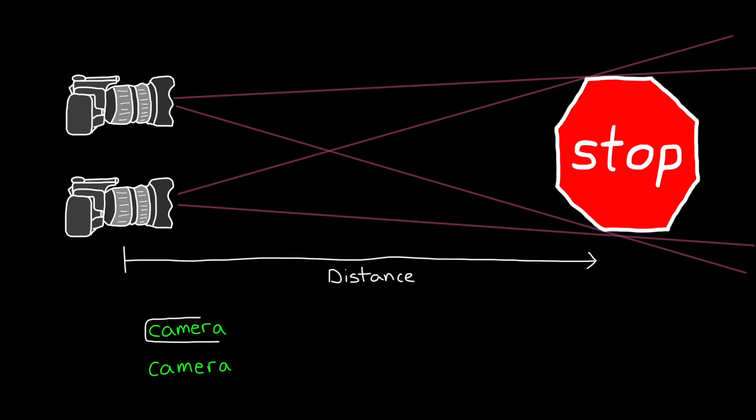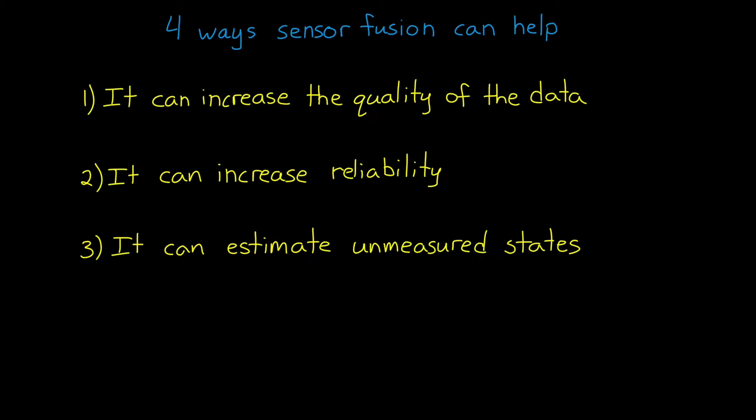The fusion algorithm would compare the scene from the two different angles and measure the relative distances between the objects in the two images. So in this way, these two sensors can't measure distance individually, but they can when combined. Now in the next video, we're going to expand on this concept of using sensors to estimate unmeasured states by showing how we can estimate position using an accelerometer and a gyro. For now though, I want to move on to the last benefit that I'm going to cover in this video.